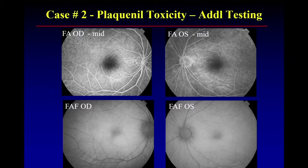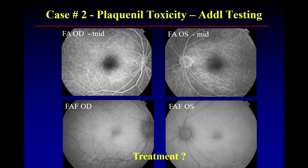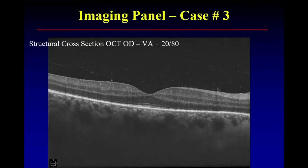There is her fluorescein — helpful, yes or no? Not a helpful test. And there's the autofluorescence, which does show subtle changes. Should we be getting OCT and autofluorescence, or is OCT enough? OCT is enough. If I had to choose one, I'd take OCT. And how about treatment — can we treat this disease? Stop the drug. You've got to stop the drug, and you should have a very low threshold for stopping it.